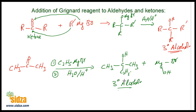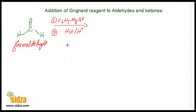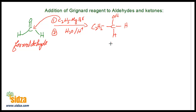So when you add Grignard's reagent to aldehydes and ketones and subsequently hydrolyze, you get alcohols. From aldehydes you get a secondary alcohol. From ketones you get a tertiary alcohol. However, if you react the Grignard's reagent with formaldehyde, the C₂H₅ group attacks the carbon and hydrogen attacks the oxygen, giving a carbon with an OH group, two hydrogens, and one alkyl group — so that is a primary alcohol.